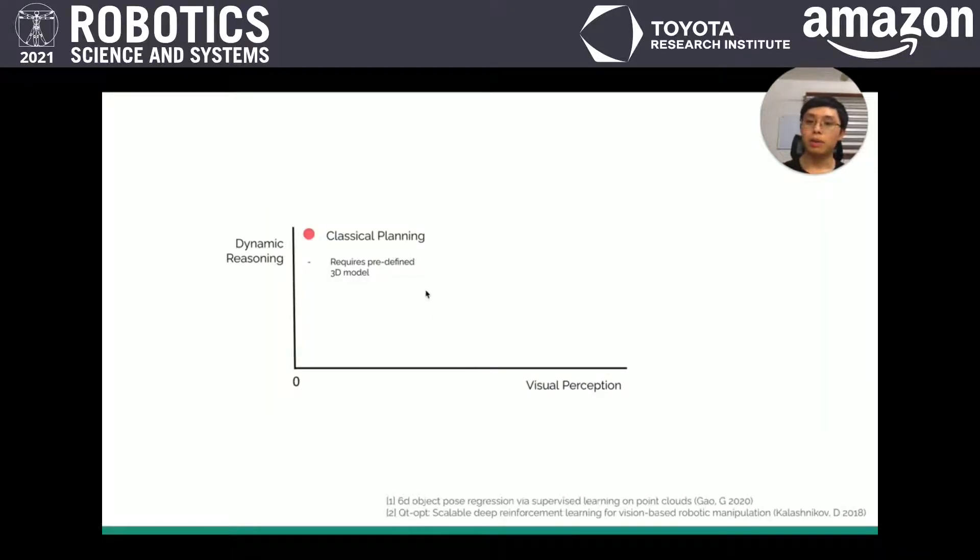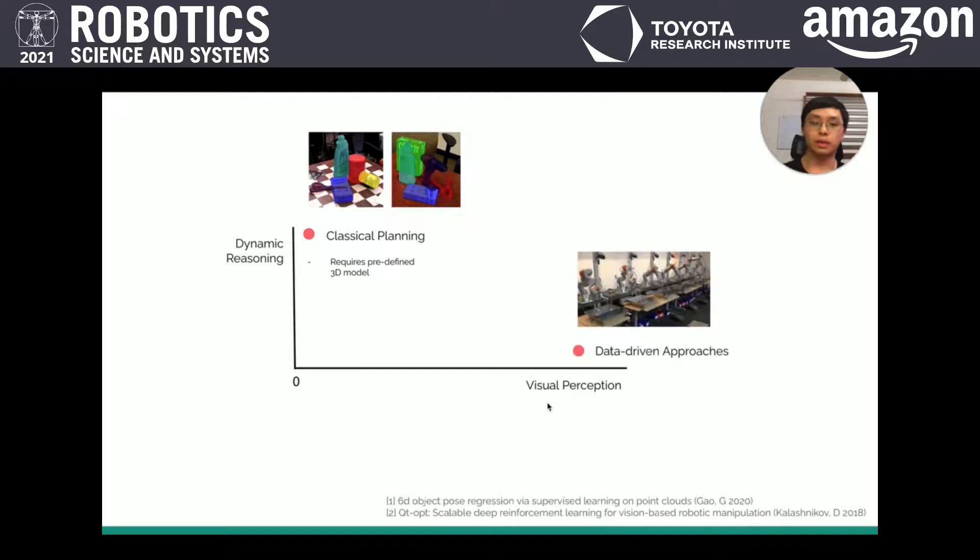Previously, the classical planning approaches often require predefined 3D models to detect the 6D pose of the objects and then search for the best actions. It often has good understanding of the dynamics, but is weak in the visual perception and has difficulties to deal with unseen objects. The recent data-driven approaches are good at visual perception, but lack dynamics reasoning.